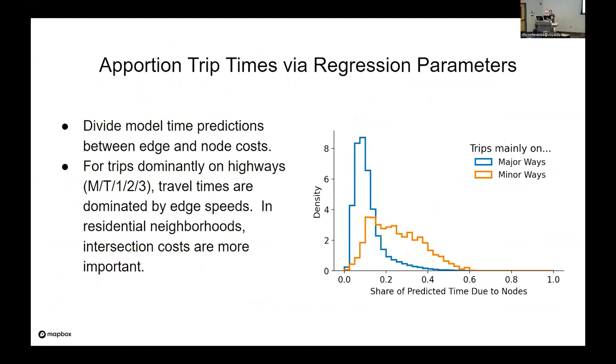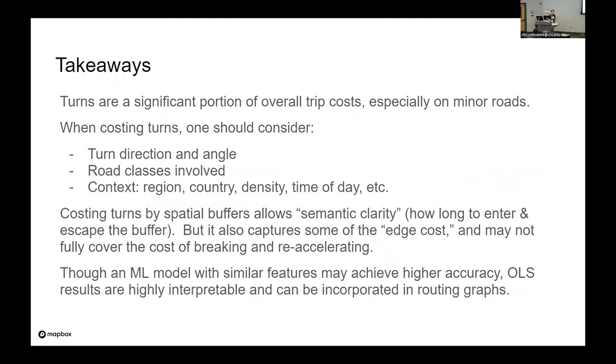You can use these regressions to apportion the time between ways and nodes and, unsurprisingly, off of highways, the more important part is the intersections. So there's takeaways. The turns are a significant portion of the overall trip costs, especially in the minor roads. We should be considering turn direction and angle that's integrated in most routing engines. We can also include road class, context by region, country, density, time of day. It's nice to have the semantic clarity of buffering specific intersections because you know this is the time that it takes to go into and out of. But that's also a way length that is taken out of the adjacent ways that you've effectively glommed on to that intersection. The OLS apportions between those two. You can imagine getting better precision by using a simple ML model, but the OLS results give you something that you can lift out, bring to a routing engine and intuitively understand. Thanks.